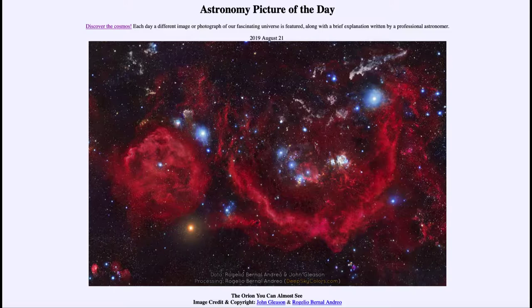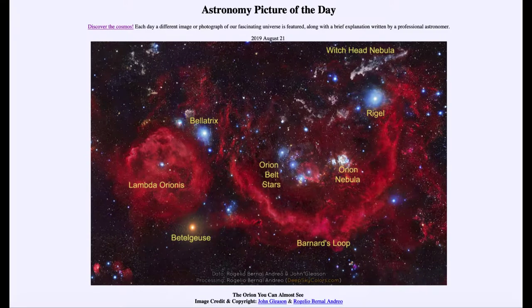Now if you have trouble seeing some of those things, you can actually move the mouse over the image and it will annotate it and show where some of these things are. So we can see where the Orion belt stars are labeled, the Orion Nebula, one of the nearby star forming regions, and also some of the stars.